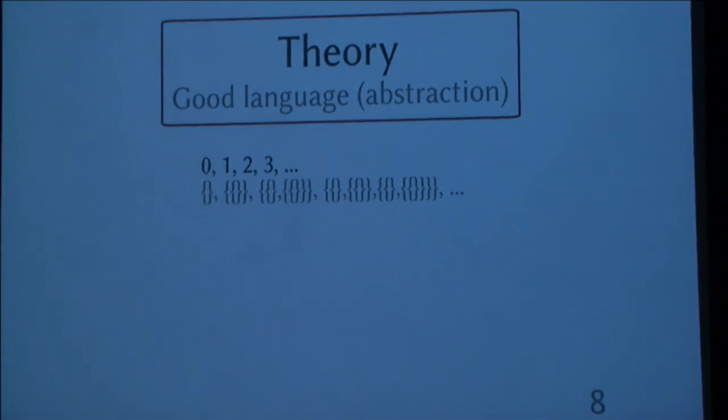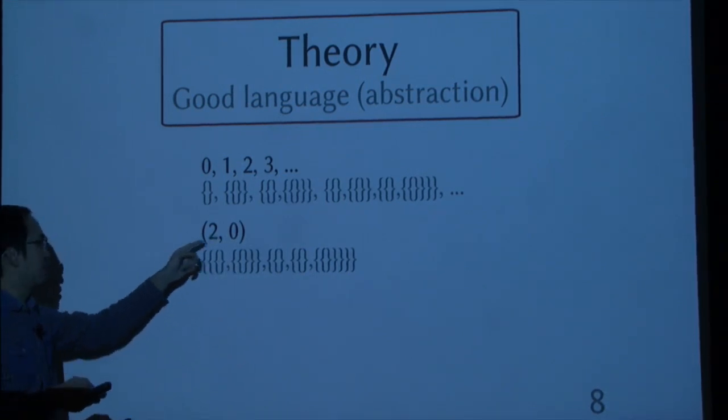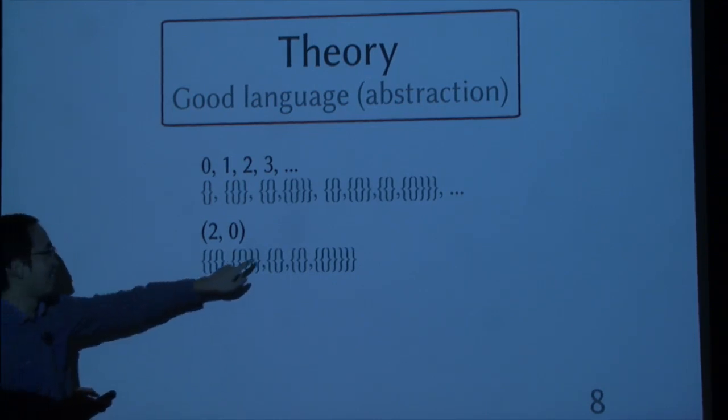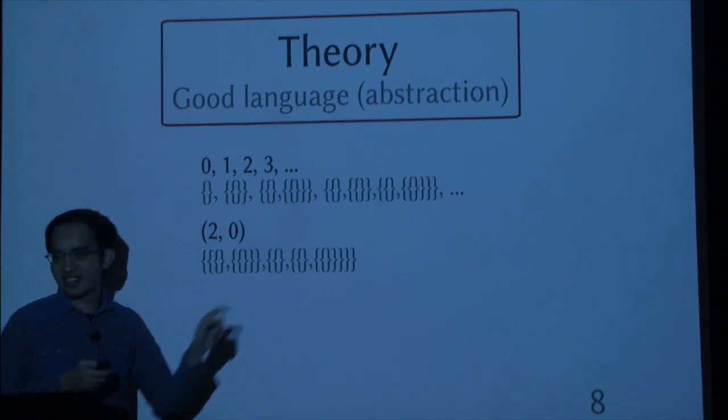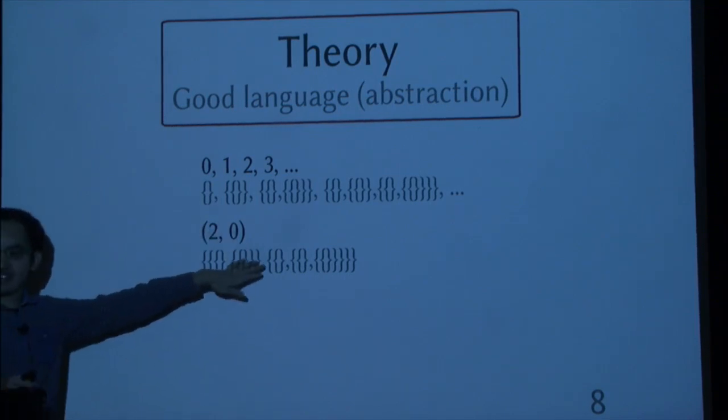And another example would be the tuple. So how do I encode this? So this is one encoding of it. There are actually several encodings of it. But one encoding would have a 2, if you can recognize it. And then with a set with a 0 and 2. But let's be honest, no one wants to work on this level.